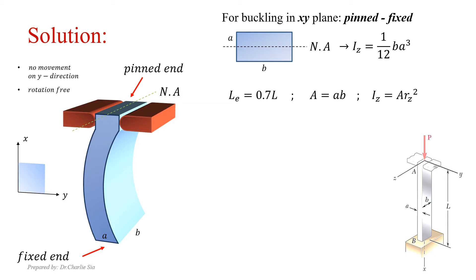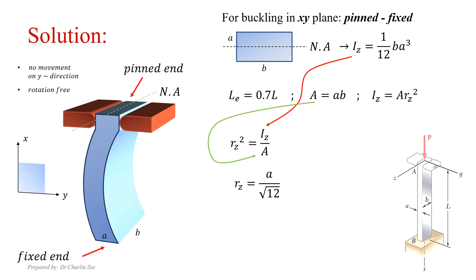Since it is pin-fixed, the effective length is 0.7L. The cross-sectional area is a × b, and the moment of inertia equals area multiplied by r², where r is the radius of gyration. Rearranging and substituting Iz and the area gives the radius of gyration equal to a divided by √12. The slenderness ratio is L_eff divided by r, which equals 0.7√12 × L / a.